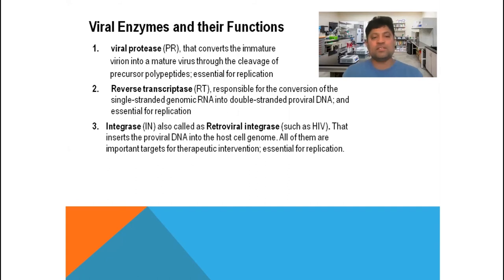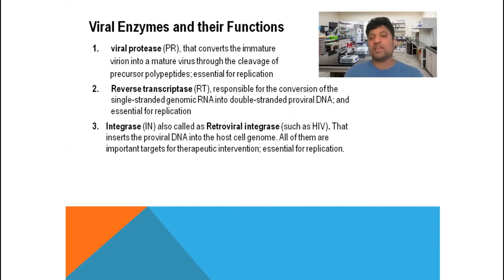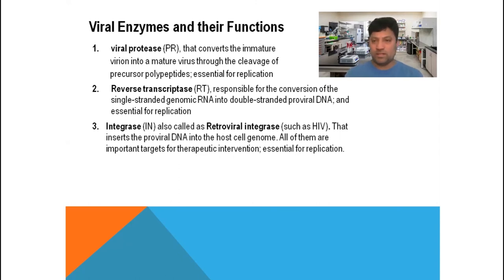The third enzyme is integrase, also called retroviral integrase, because these viruses are most often produced by retroviruses. The most popular example of a retrovirus is HIV — the human immunodeficiency virus — which inserts the proviral DNA into the host cell genome. All of these enzymes are important targets for therapeutic intervention and are essential for replication, because if you stop the function of the enzyme, you stop the life of the virus, and in this way you can control viral growth and treat the infection.